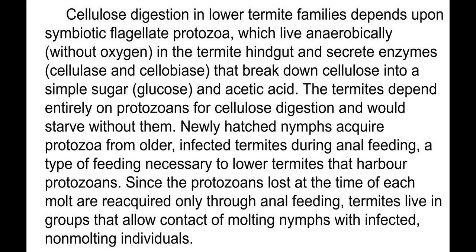Cellulose digestion in lower termite families depends on symbiotic flagellates, which live anaerobically in the termite hindgut and secrete enzymes — cellulase and cellobiase — that break down cellulose into simple sugars and acetic acid. The termites depend entirely on protozoans for cellulose digestion and would starve without them. Newly hatched nymphs acquire protozoa from older, infected termites during anal feeding. Since the protozoans are lost at the time of each molt, they are reacquired only through anal feeding. Termites live in groups that avoid contact of molting nymphs with infected non-molting individuals.